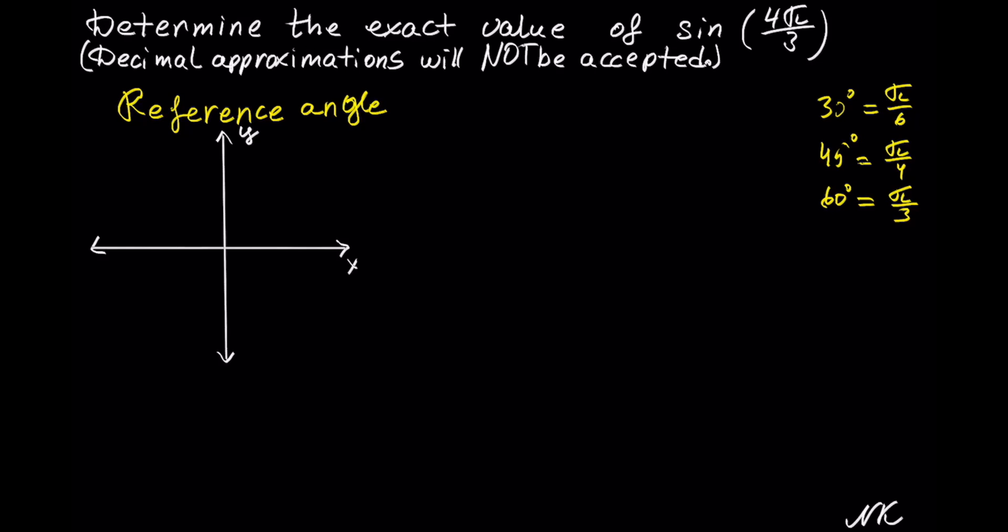Here we have the x and y axis. 0 radians is on the positive x-axis, we have π/2 on the positive y-axis, π on the negative x-axis, and 3π/2 on the negative y-axis.